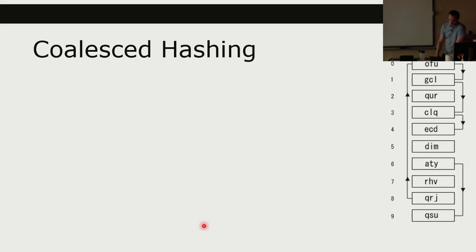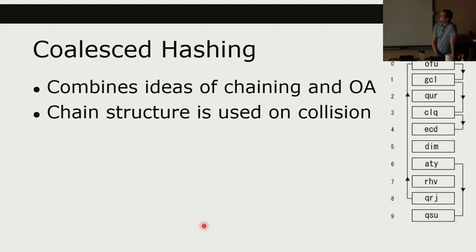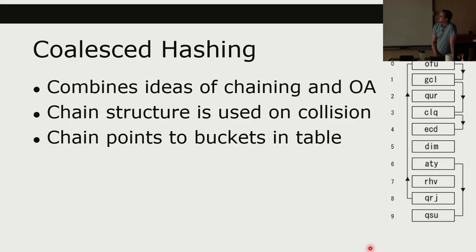There's also coalesced hashing, which combines ideas of chaining and open addressing. The chain structure is used on a collision, but the chain points to buckets in the table. So instead of growing a list externally, you find a place in the hash table using open addressing, then point to the memory address or index of where the next item is stored.